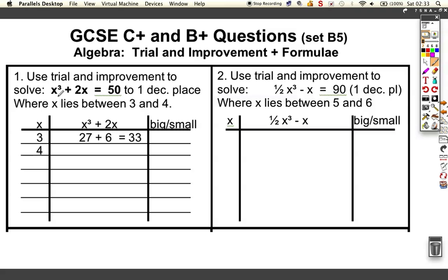Let's look at the first one and see if we can follow the set method. It's asking us to solve x³ + 2x = 50, and it tells us the answer lies between 3 and 4. So if you put 3 in, 3³ + 2 lots of 3 is 33, that's clearly too small.